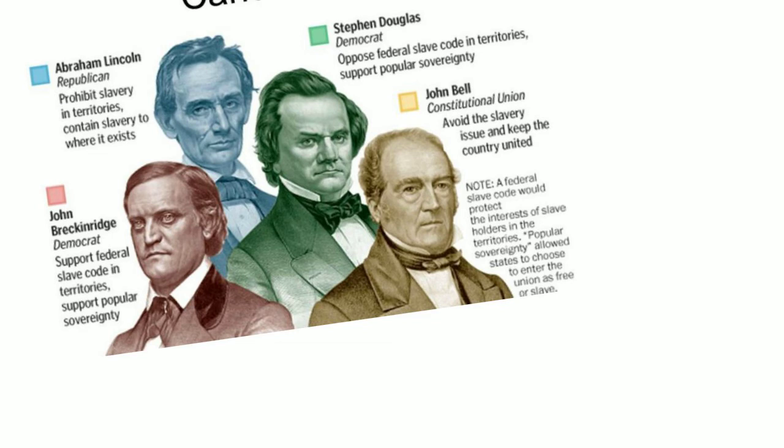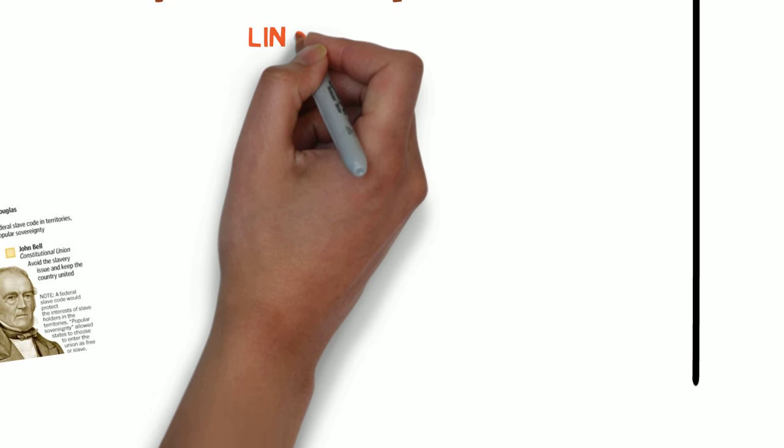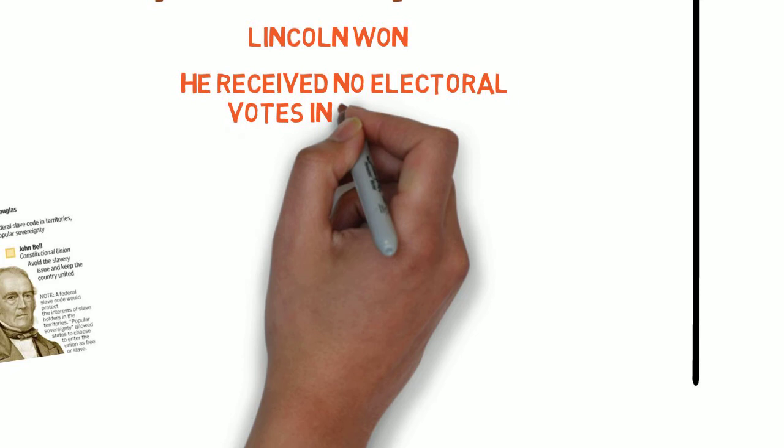The election of 1860 was between four candidates. The slavery issue split up the Democratic Party into Northern and Southern factions. Stephen Douglas ran for the Democratic Party, while John Breckinridge ran for the new Southern Democratic Party. Also throwing his hat into the ring was John Bell, who ran for the new Constitutional Union Party. Abraham Lincoln won the election, despite not receiving any electoral votes in the South.